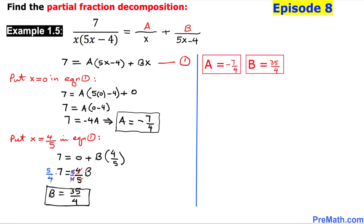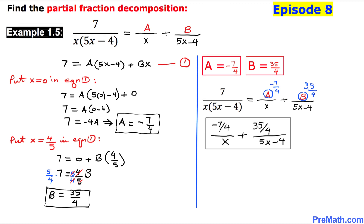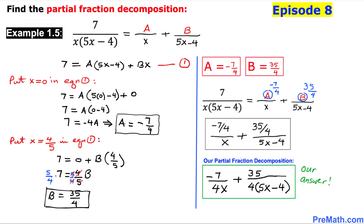So our value of A turns out to be negative 7 over 4 and B turns out to be 35 over 4. In the partial fraction decomposition, wherever we see A we replace it with negative 7 over 4, and wherever we see B we replace it with 35 over 4. So negative 7 over 4 goes in the first fraction's numerator and 35 over 4 goes in the second fraction's numerator. And here is our final answer. Thanks for watching, and please don't forget to subscribe to my channel for more exciting videos.